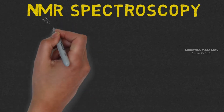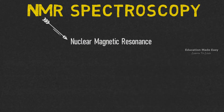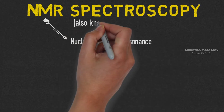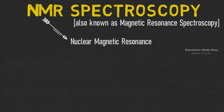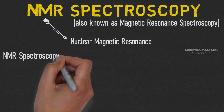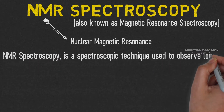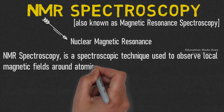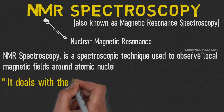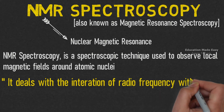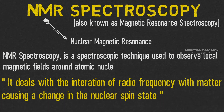In NMR spectroscopy, NMR stands for nuclear magnetic resonance. It is also known as magnetic resonance spectroscopy. NMR spectroscopy is a spectroscopic technique used to observe local magnetic fields around atomic nuclei. It deals with the interaction of radio frequency with matter, causing a change in the nuclear spin state.